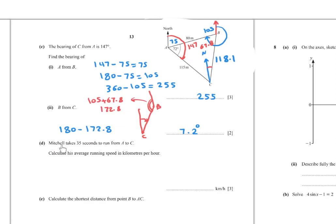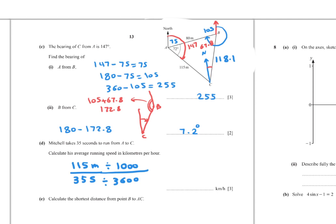Part (d): Mitchell takes 35 seconds to run from A to C. Calculate his average speed in kilometres per hour. Speed equals distance divided by time: 115 metres divided by 35 seconds. Convert metres to kilometres (divide by 1000) and seconds to hours (divide by 3600). The answer equals 11.8 kilometres per hour.